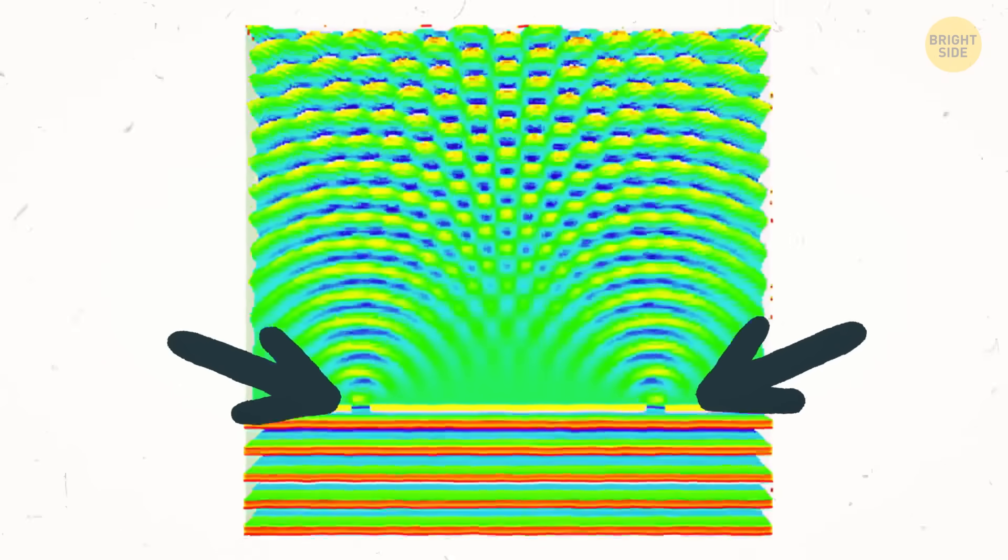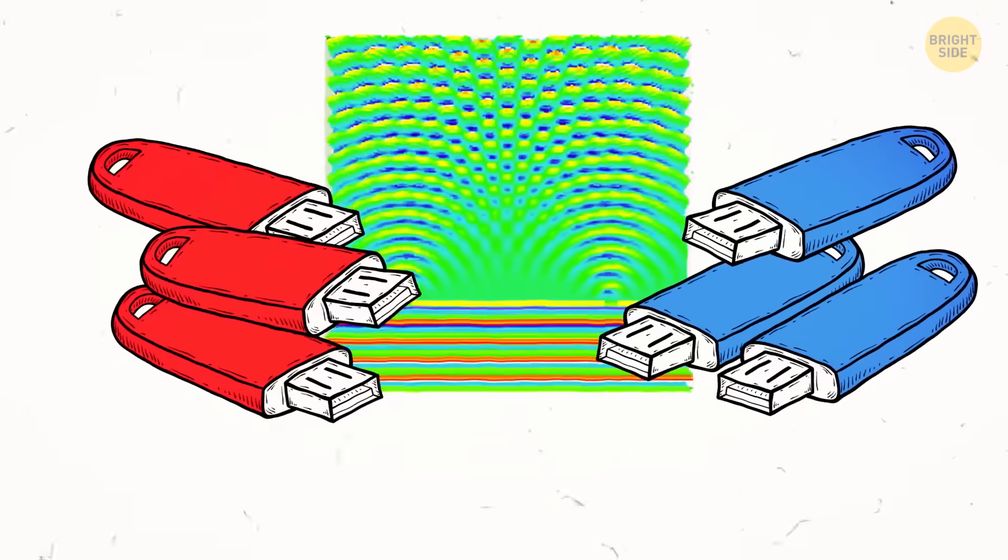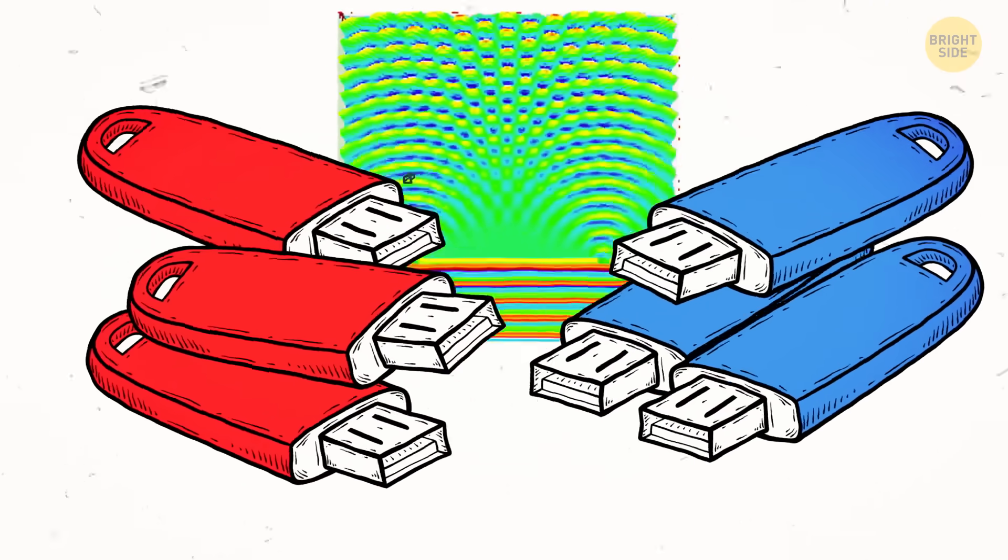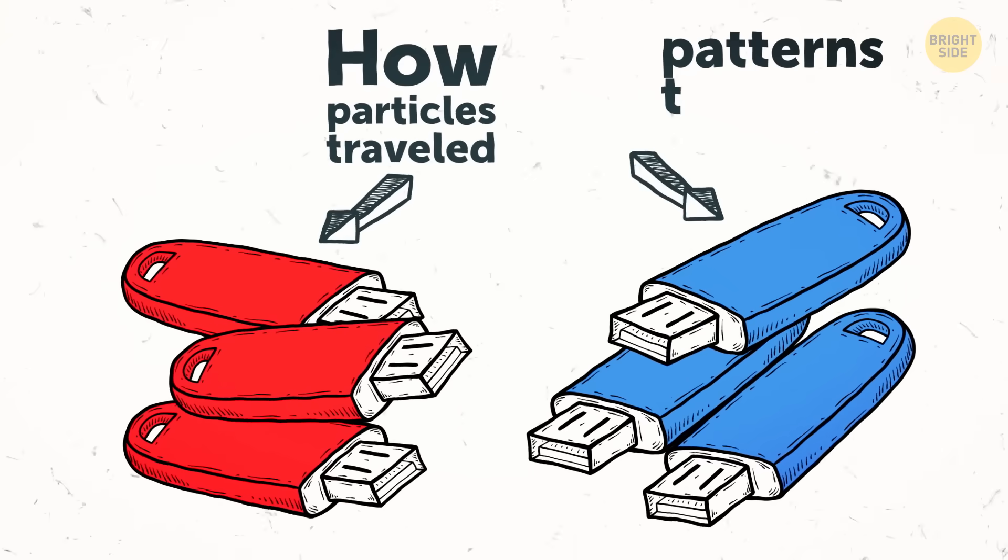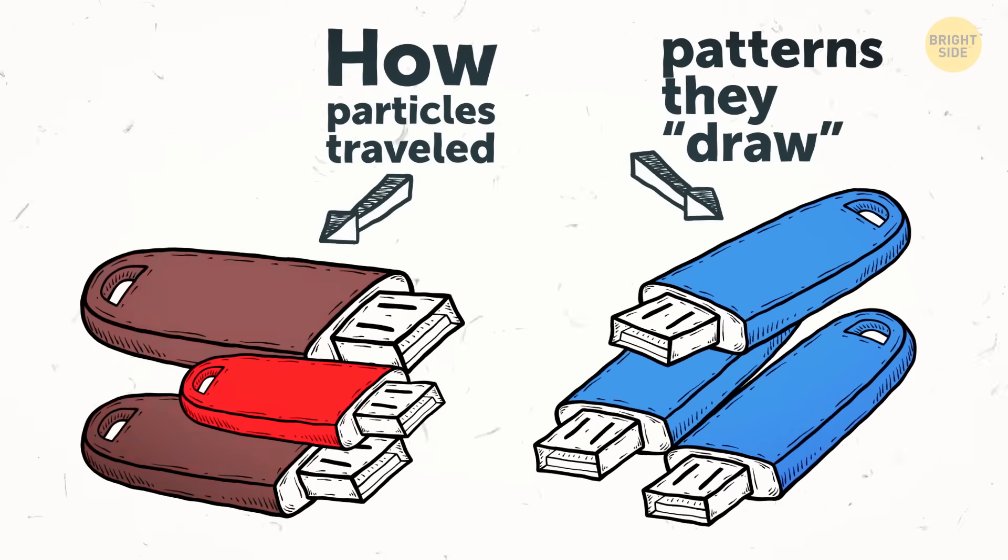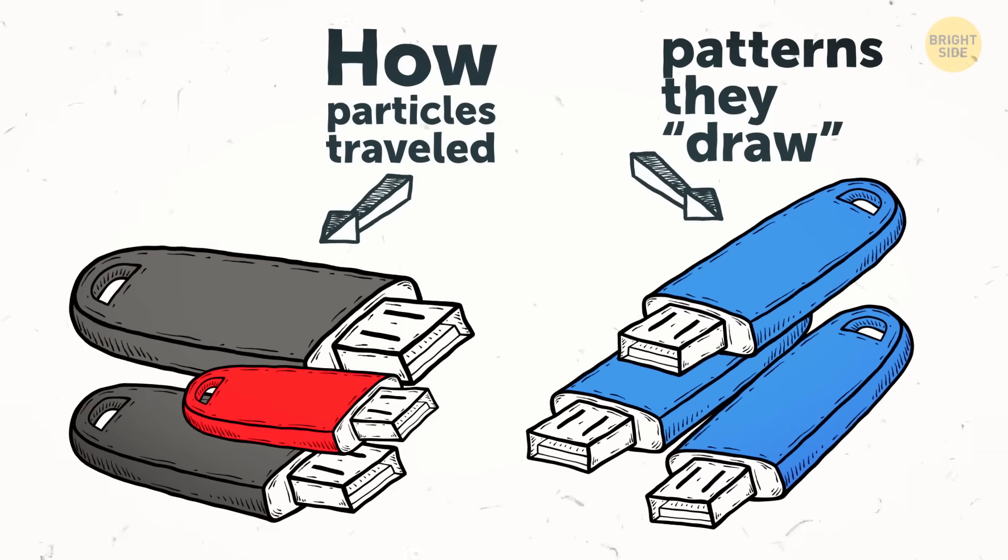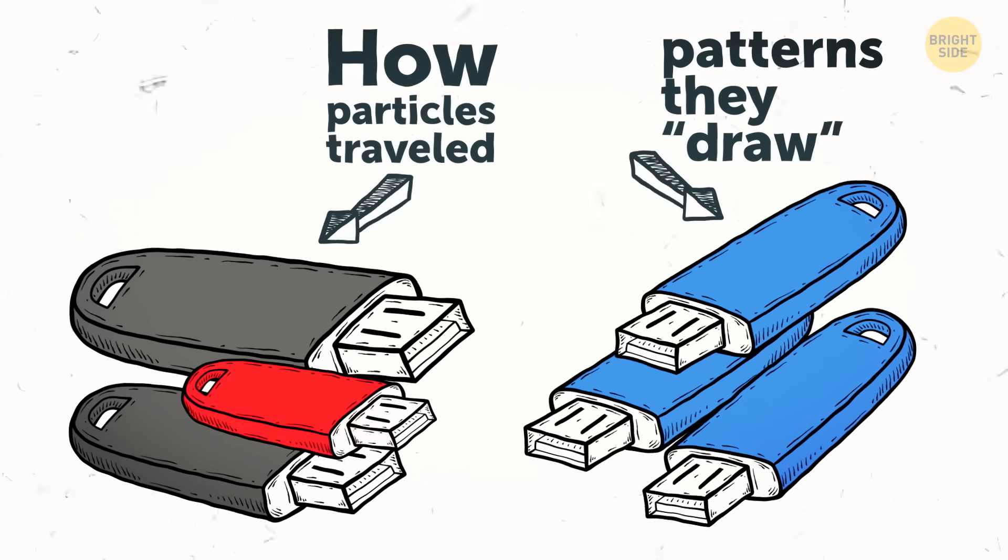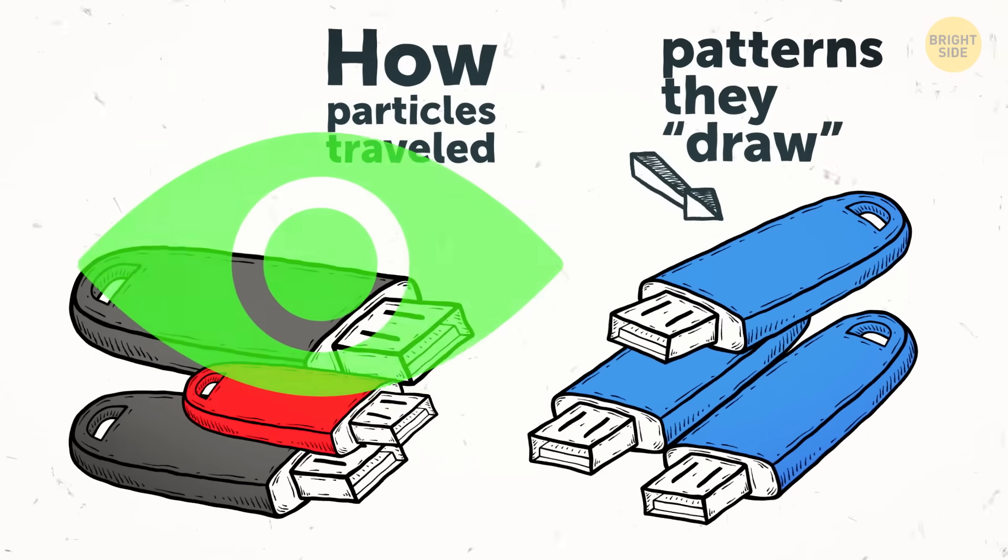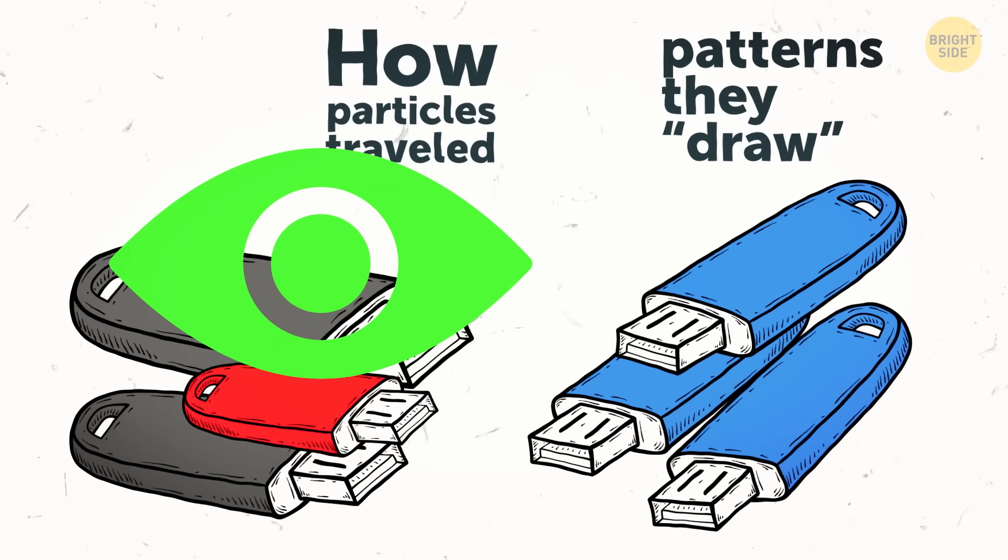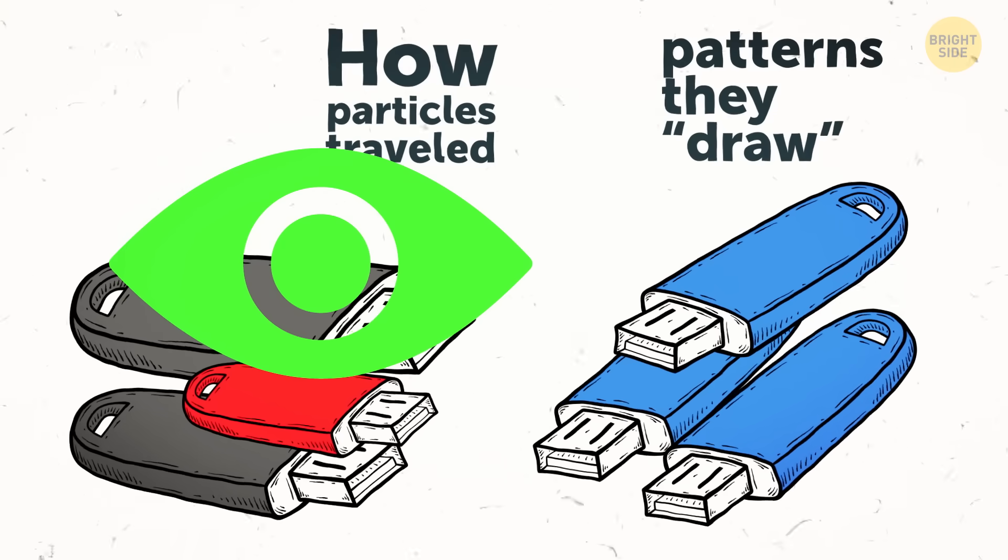The second experiment goes like this. They send a bunch of particles for a run through the slits. Let's say they want to record the results on red and blue USB drives. How particles travel goes on the red drives. The final patterns they draw on the screen goes on the blue drives. Then they randomly destroy some of the red drives. For some particles, we know only what drawings they left, but don't have the recordings of their journey anymore. Now, imagine if the universe somehow realizes that we destroyed those. It knows that now we can't actually watch how the particles travel.